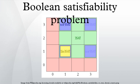Like the satisfiability problem for arbitrary formulas, determining the satisfiability of a formula in conjunctive normal form where each clause is limited to at most three literals is NP-complete. This problem is called 3-SAT, 3-CNF-SAT, or 3-Satisfiability.